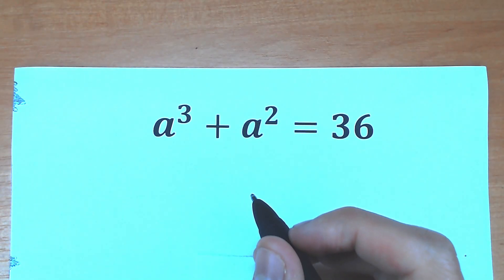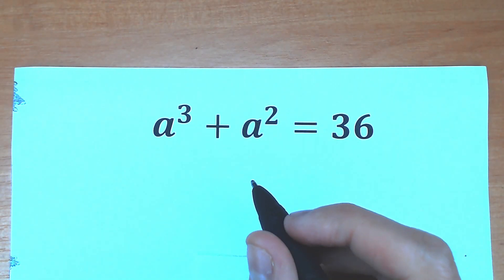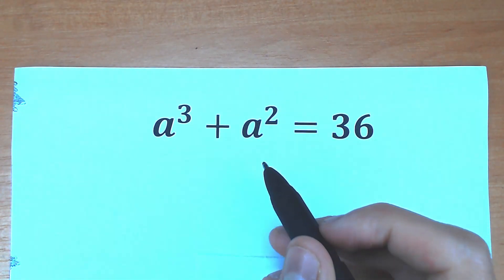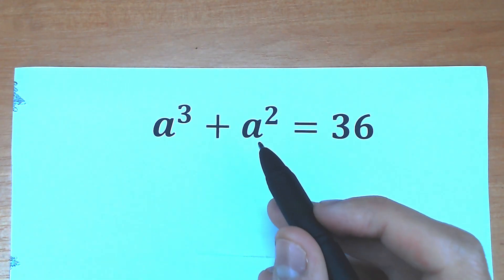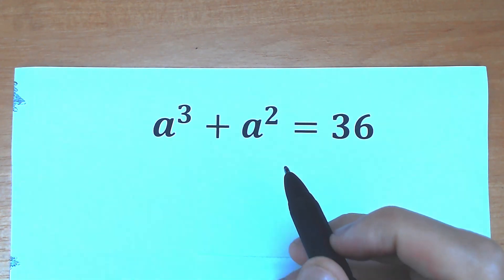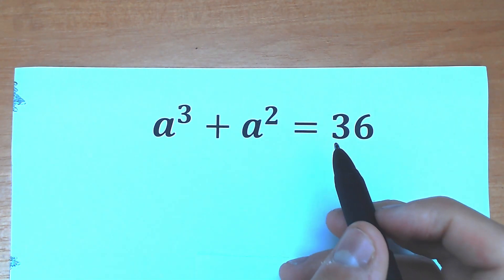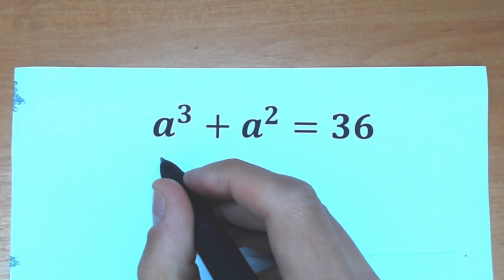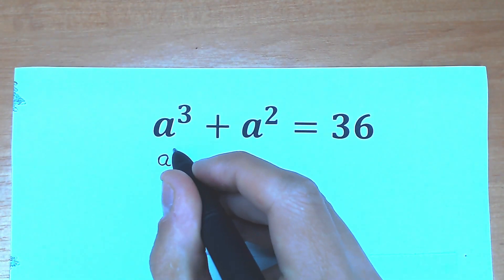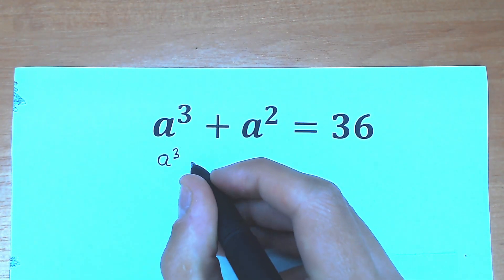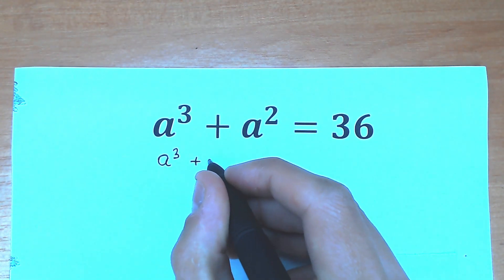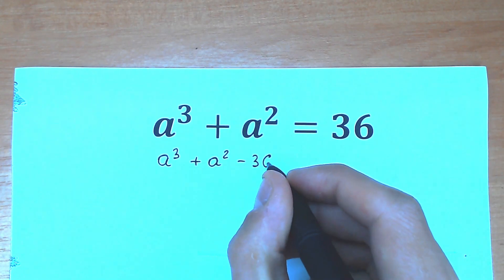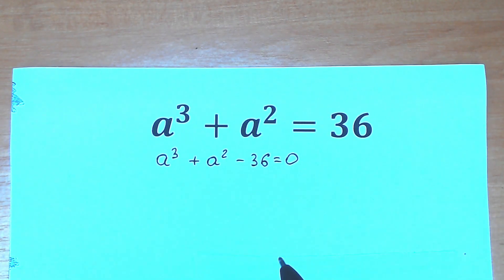Welcome to the channel. Today's challenge: a³ + a² = 36, and we need to find 'a' from this interesting equation. First, let's bring 36 from the right-hand side to the left-hand side, giving us a³ + a² - 36 = 0.